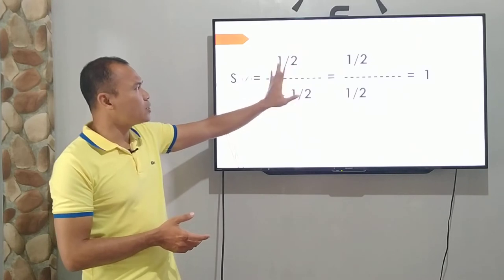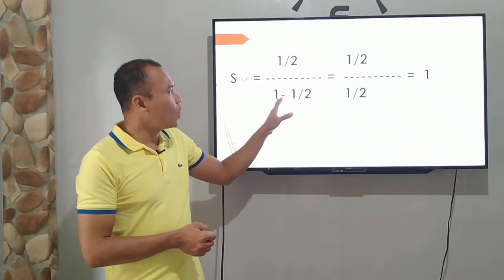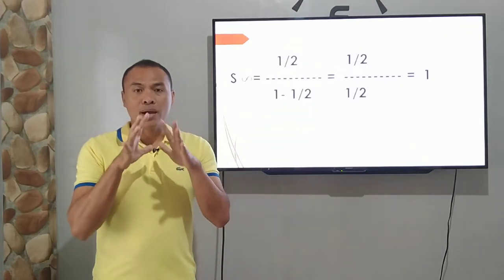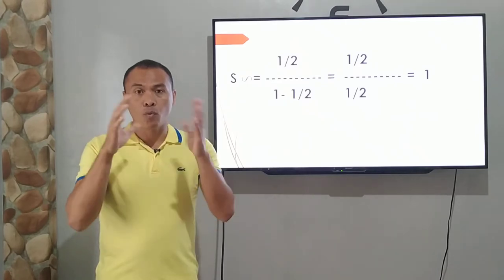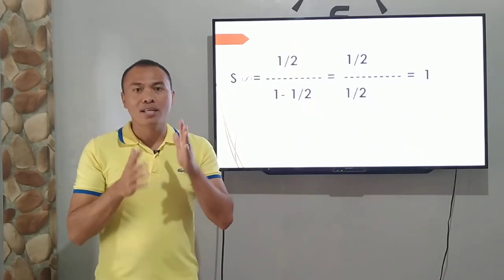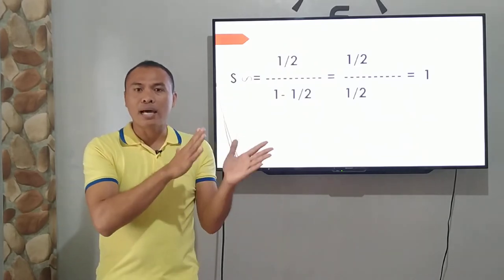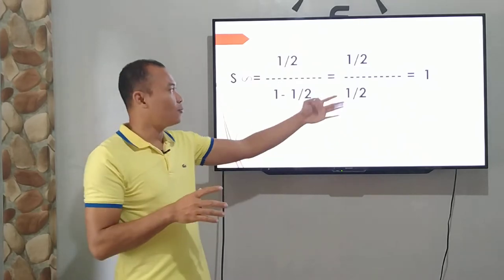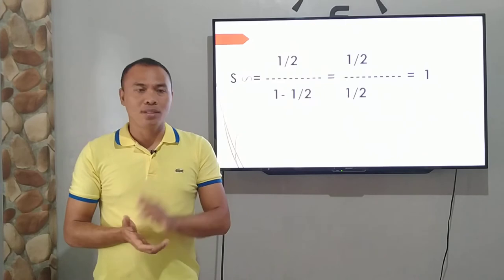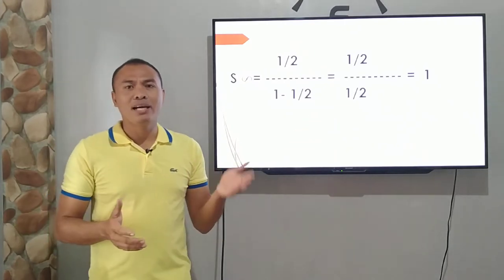The first term is 1 half. Then 1 minus r is 1 half. 1 minus 1 half. Tinuturo sa inyo sa elementary na pag isa buo, one whole, pag kinalahati, binawasan ng kalahati, ang sagot ay kalahati. Parang pizza na pag buo siya, kinuha mong kalahati, ang matitira ay kalahati. And if you divide numbers, the same number, ang kanyang sagot is 1. So ganun lang siya kadali. Madali lang itong infinity.